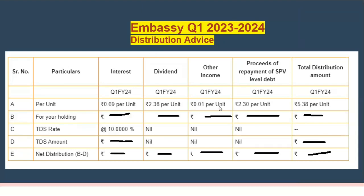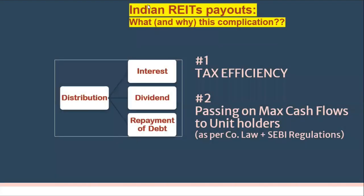Now where does this impact you? Where does this impact the REIT, and why is it done? This is the subject of our video. The Indian REIT payout comprises interest, dividend, and repayment of debt. There are two basic reasons: one is tax efficiency, and the second is that REITs want to pass on maximum cash flows to unit holders while complying with company law as well as REIT regulations — including the SEBI regulation requiring distribution of more than 90% of cash flows to unit holders.